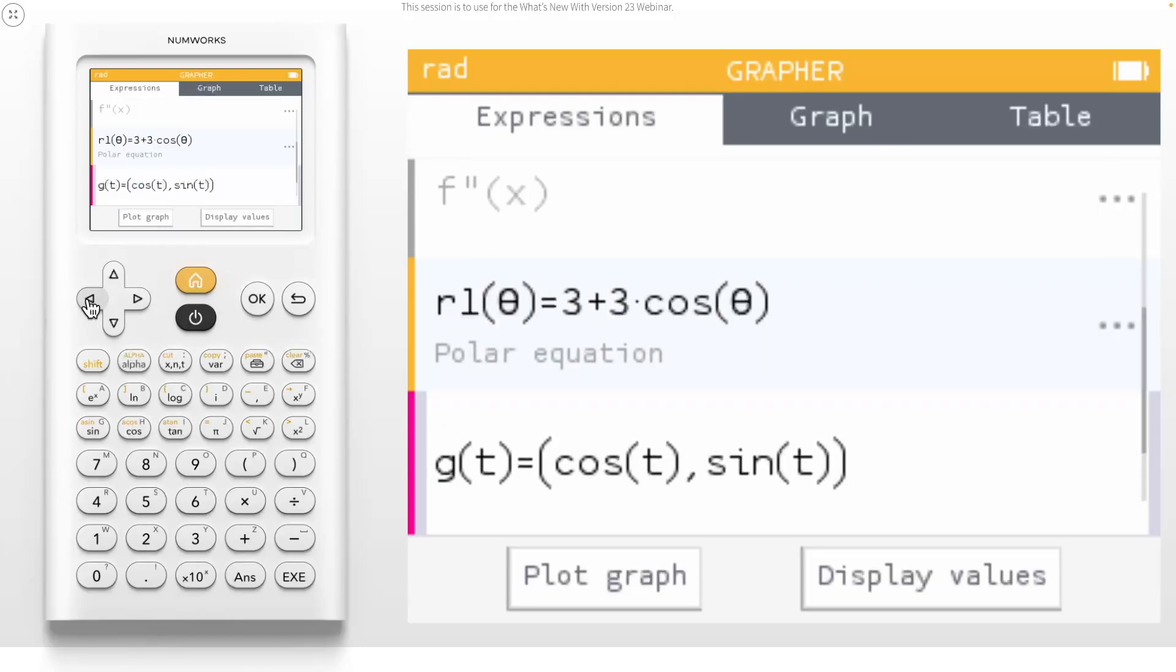I'll want a parametric function inputted for a later demonstration, so let's create the parametric function with an x component of 5 cosine of 2t and a y component of 3 sine of 6t. Therefore, we should have g of t equals 5 cosine of 2t and 3 sine of 6t.